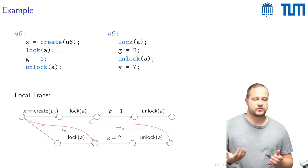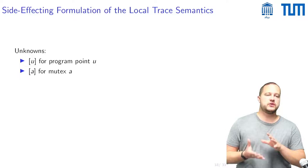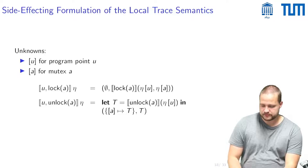So quite surprisingly one can also very nicely formulate this concrete semantics in a side-effecting manner and then one ends up with unknowns u for program point u where one stores all local traces that end in this program point u and unknowns a for mutex a where one stores all local traces that end with an unlock of this corresponding mutex.